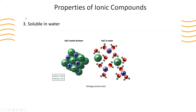Another property of ionic compounds is that they are generally soluble in water. When we look at this image of the crystal structure of sodium chloride, we see the negative and positive charges that exist within the compound. Water, being a polar molecule, has a slightly positive end where the hydrogen atoms are and a slightly negative end where the oxygen atom is. When a salt crystal is placed in water, the positive ends of water will surround the negatively charged chloride atoms and the negative side of water will surround the positively charged sodium atoms.